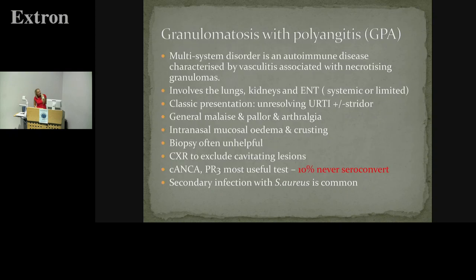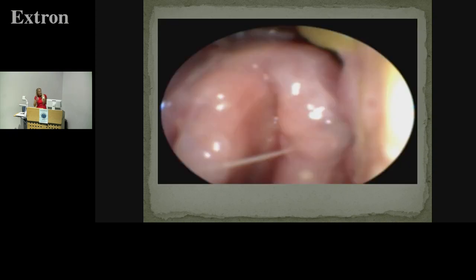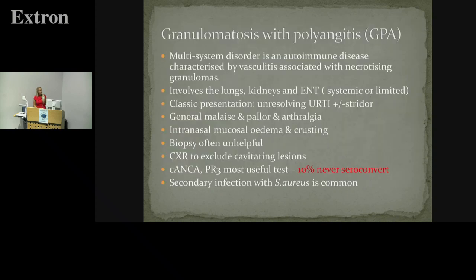Even though she was ANCA negative, in conjunction with my rheumatologist, we started her on methotrexate, and she's absolutely transformed — the mucosa has become normal. They did find other signs on their examination that went with the diagnosis of GPA. So it may be difficult to get the diagnosis, but you want to keep thinking about it in these more difficult cases.